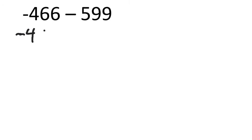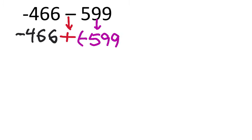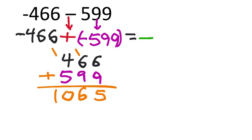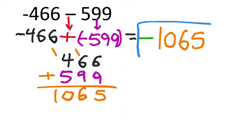This one has bigger numbers but it's not too bad. Keep change change: negative 466 — keep that. Change the operation from subtraction to addition, and change positive 559 to negative 559. So negative 466 plus negative 599 — we're adding two values with the same sign, both negative, so the answer is more negative. Adding 466 and 599: 6 plus 9 is 15, carry 1; 1 plus 6 is 7, plus 9 is 16, carry 1; 1 plus 4 is 5, plus 5 is 10. That gives us 1065, and applying the negative: our final answer is negative 1065.